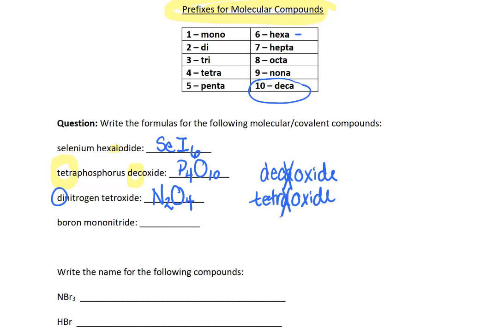If we have an A-O or an O-O, we drop the first letter of that double vowel combination. Our final one is boron mononitride. Boron is B, and nitride is N. So this is BN.